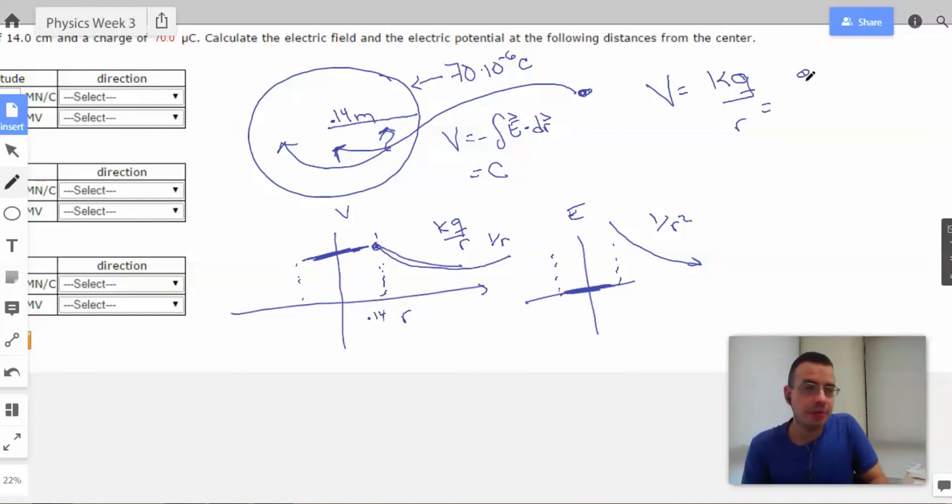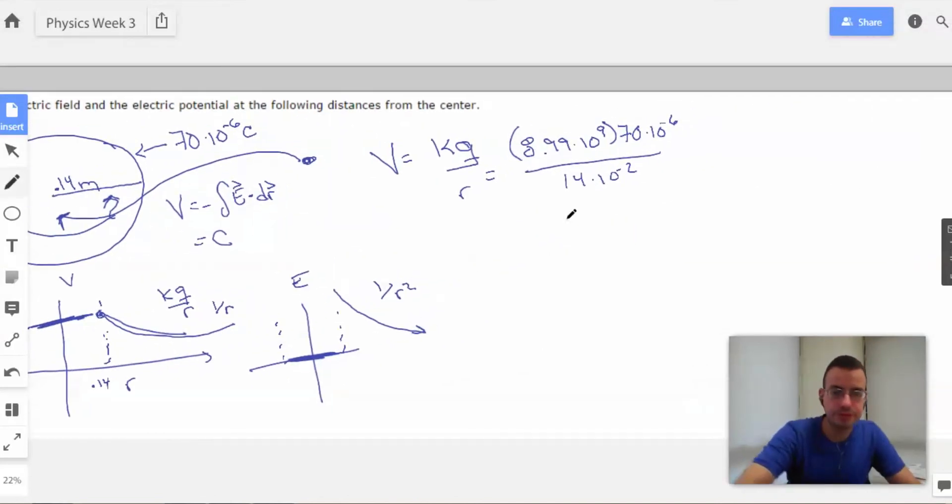Which will be 8.99 times 10 to the 9th times Q, which is 70 times 10 to the negative 6th over 0.14, which is 14 times 10 to the negative 2nd. Simplifying slightly. 9 plus 1 is 10, 10 minus 6 is 4, 4 plus 2 is 6.